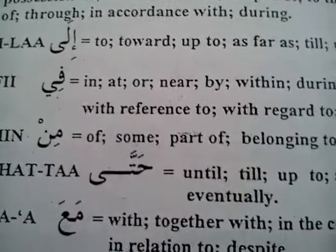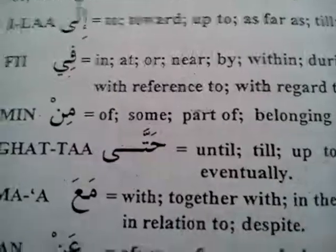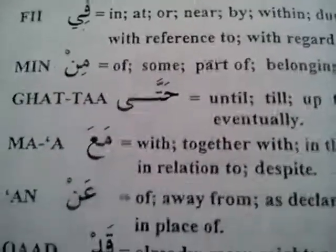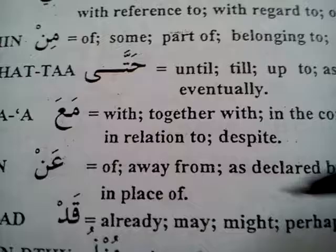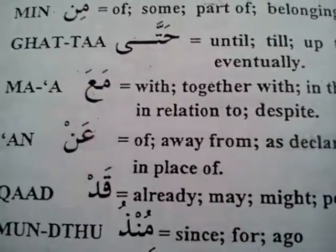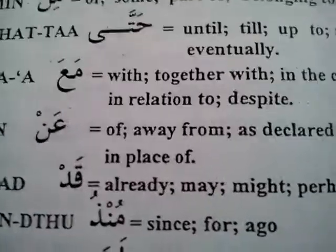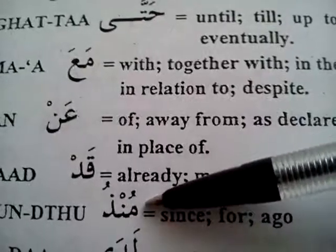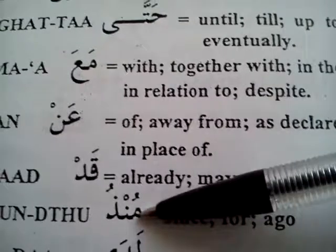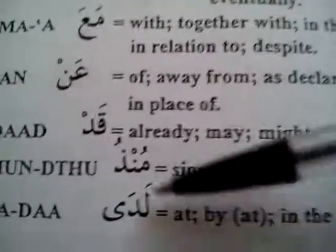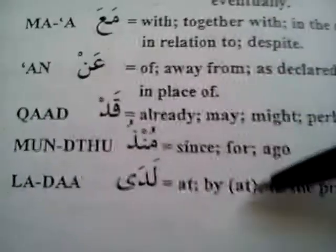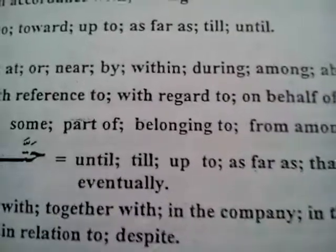'Hatta' will be until or till. And 'ma'a' will be with. 'An' will be of, or away from, or as declared of. 'Qada' will mean already, may — these are just some of the meanings. 'Mindhu' or 'mundhu' will mean since. 'Lada' will be at, or by, or in presence of. So you see the variations of the meanings.